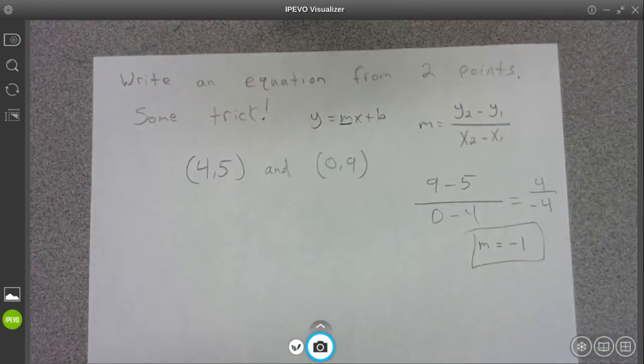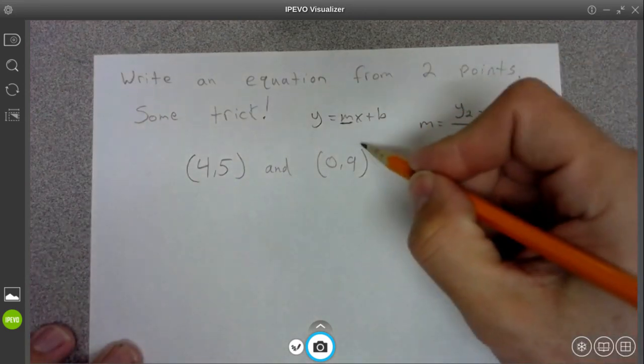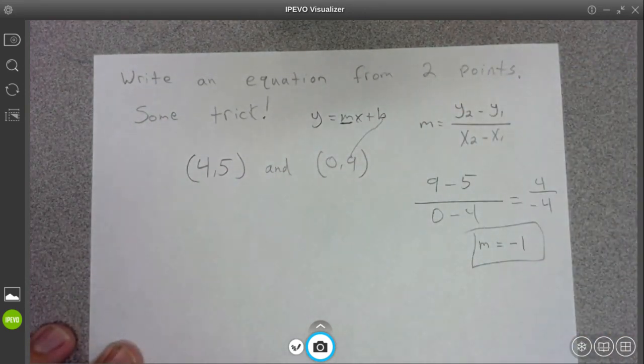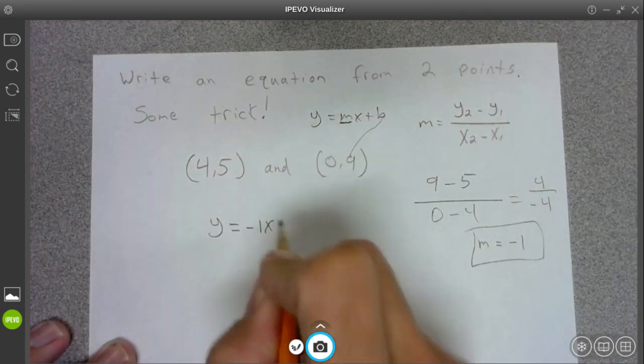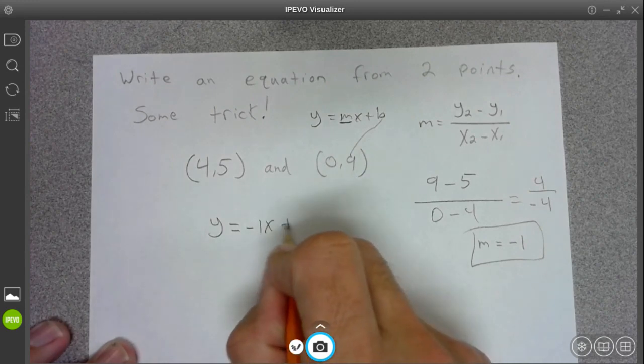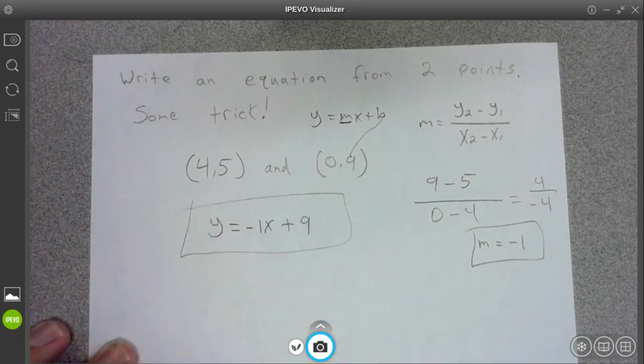So when they give that to you, you don't have to do that whole rigmarole thing that we did last time. We can just plug that 9 in for b. So our answer here is y equals negative 1x, or just negative x, plus 9.